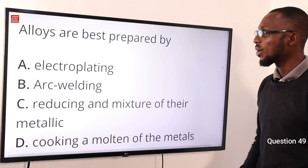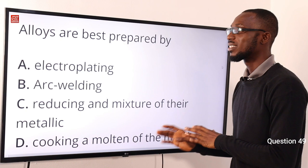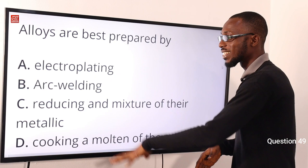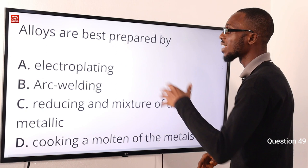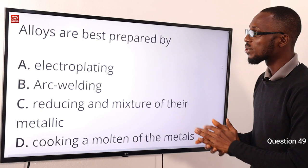Question 49: Alloys are best prepared by electroplating — coating one metal with another. Sometimes carbon is introduced for certain reasons. Alloys are mixtures of different elements, usually metals and others. The correct option here is option A for electroplating.